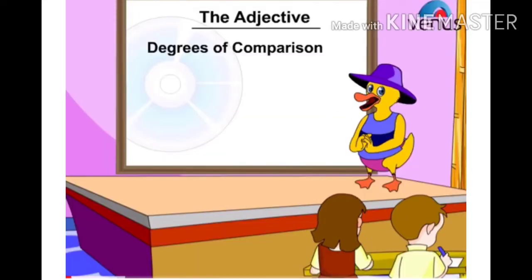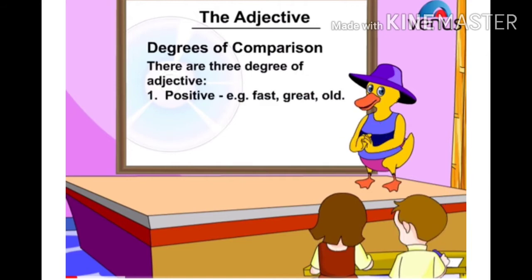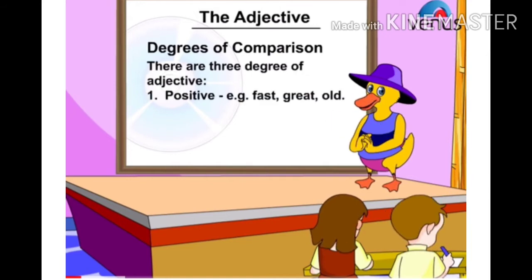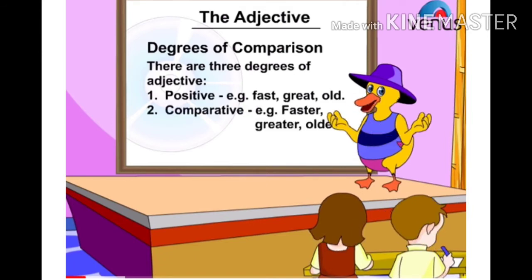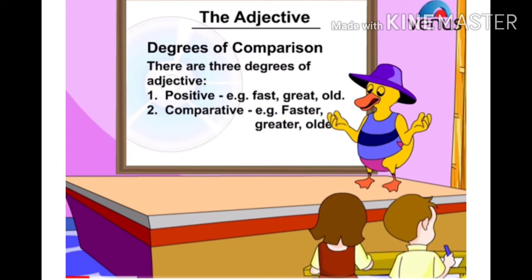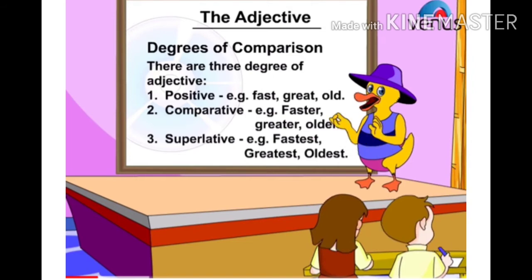Degrees of Adjective. There are three degrees of adjectives. One: positive — e.g., fast, great, old. Two: comparative — e.g., faster, greater, older. Three: superlative — e.g., fastest, greatest, oldest.